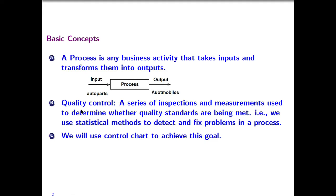B. Quality Control. Quality Control is a series of inspections and measurements used to determine whether quality standards are being met. In our study, we use statistical methods to detect and fix problems in a process. We will use the so-called control chart to achieve our goal.